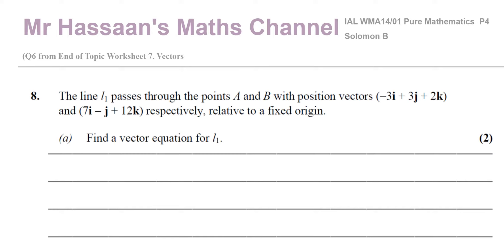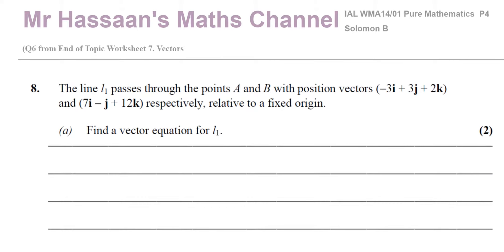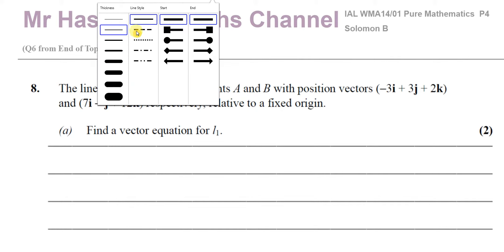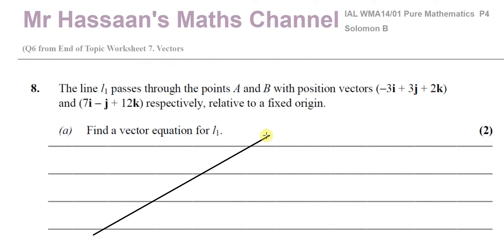We're asked, first of all, to find the vector equation of a line which passes through the points A and B, with the position vectors of A and B given. That's the first part of the question — quite a standard type in vectors. So if we imagine there's a line L1 passing through the points A and B, which have position vectors relative to the origin.